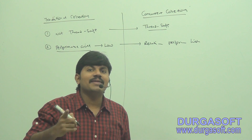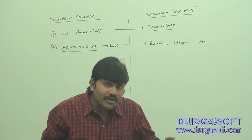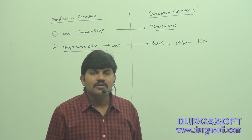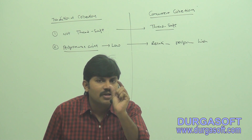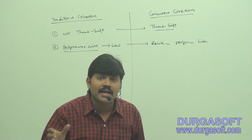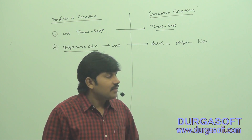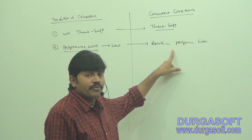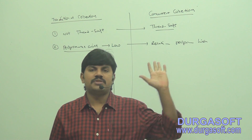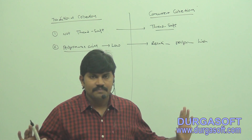This is because of a different locking mechanism used in concurrent collections. Instead of locking the total collection, a thread gets the lock of a particular block or segment. This type of locking is called segment locking or bucket-level locking. Performance-wise, concurrent collections are far better than traditional thread-safe collections because this different locking mechanism is used internally.